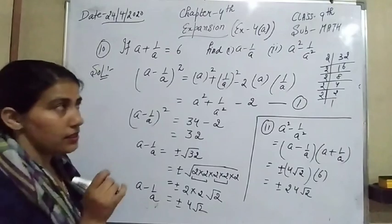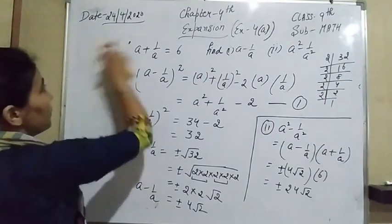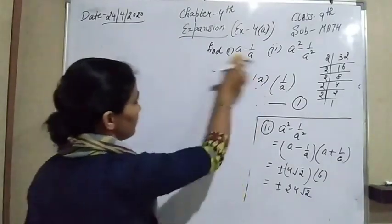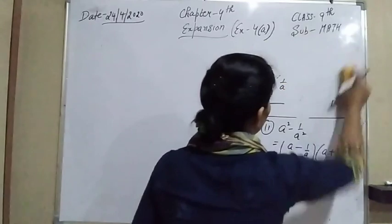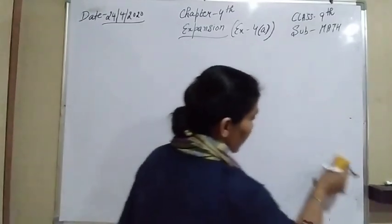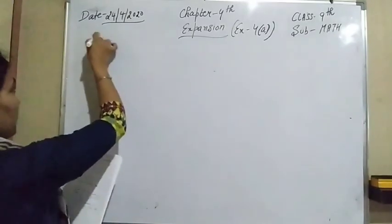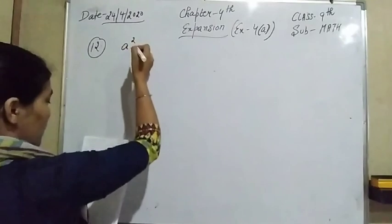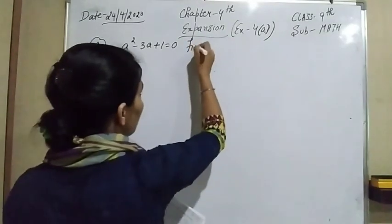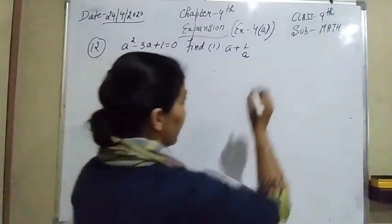Now come to the next question of this worksheet. The 12th question: we have given a square minus 3a plus 1 equals 0, and we have to find out, firstly, a plus 1 over a, and secondly, a square plus 1 over a square.